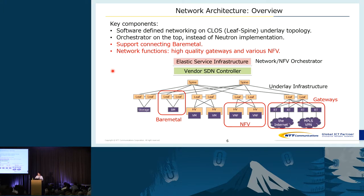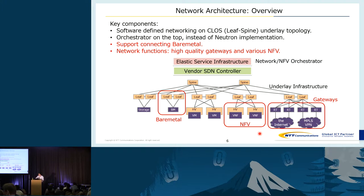This is the whole network architecture of our cloud platform. To meet our enterprise customer needs, we need to support connectivity for bare metal servers, provide high quality gateway service, and also provide various NFV services to customers. To connect each component, we use an SDN controller, and on top of the controller we are using our original orchestrator named Elastic Service Infrastructure.